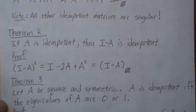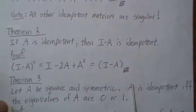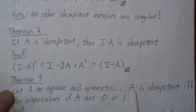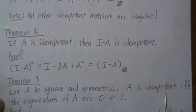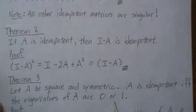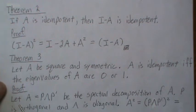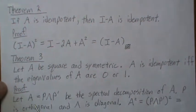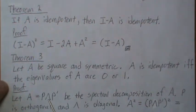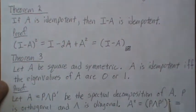Let A be a square and symmetric matrix. The following statement is true: A is idempotent if and only if the eigenvalues of A are 0 or 1. To prove this, let A equal P lambda P prime — that's the spectral decomposition of A, because it's symmetric and square. P is orthogonal and lambda is diagonal.